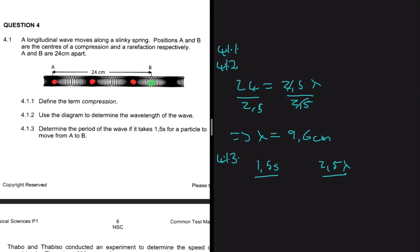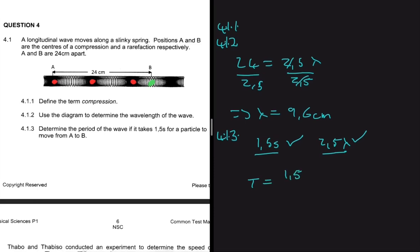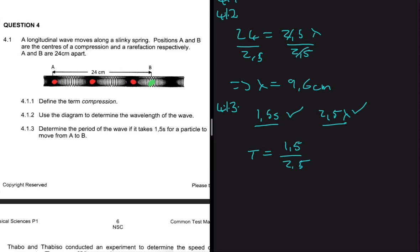The period is the time it takes to complete one wavelength. We are told that completing 2.5 wavelengths takes 1.5 seconds. So to find the period, we calculate 1.5 divided by 2.5, which gives us 0.6 seconds — the time to complete one wavelength.